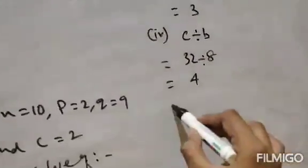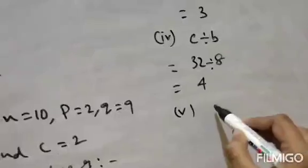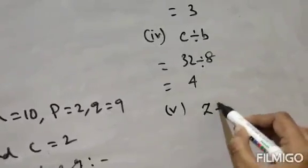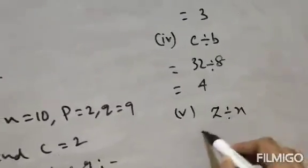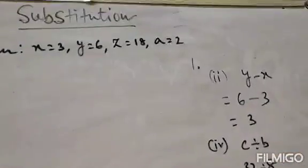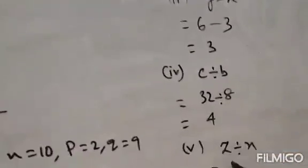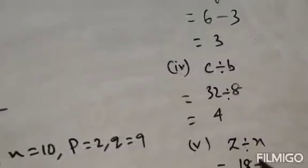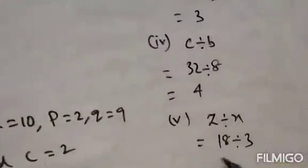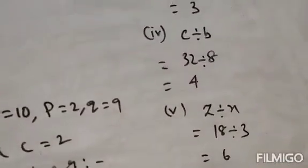Question number 5 is z divided by x. The value of z is 18 and the value of x is 3, so 18 divided by 3 equals 6.